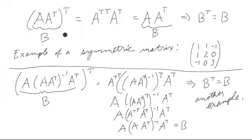Let's look at another example. What if we have something like A A transpose, and we take the transpose of it? We reverse the order. So we have A transpose transpose, and A transpose.